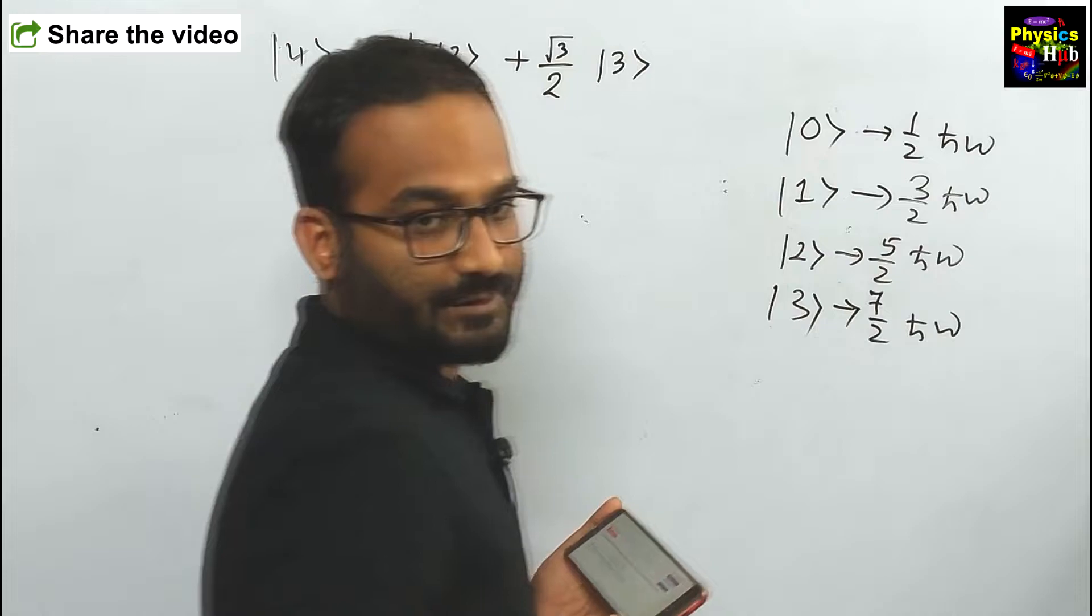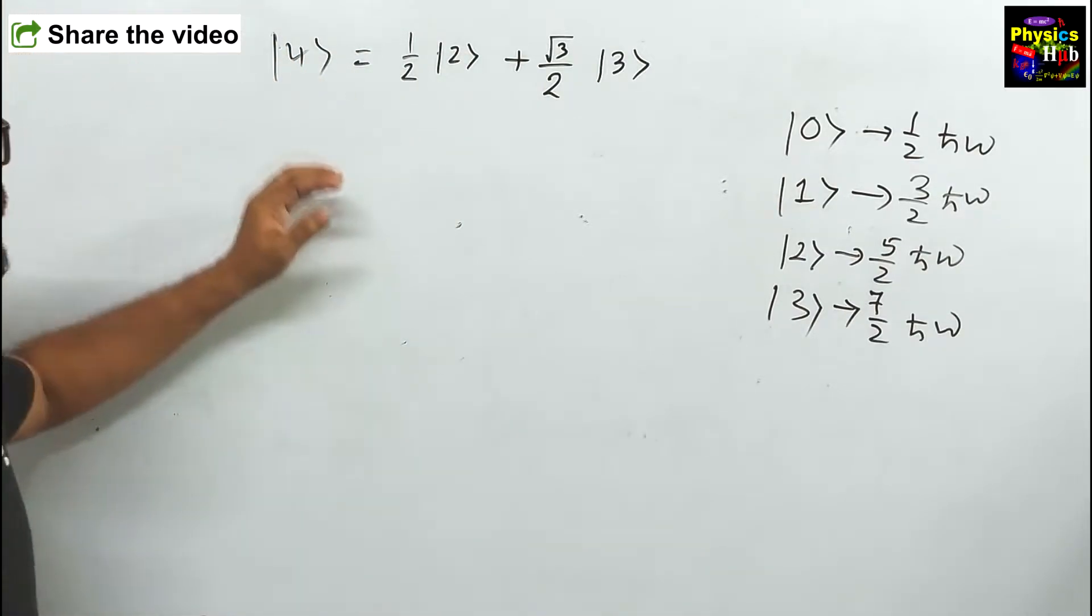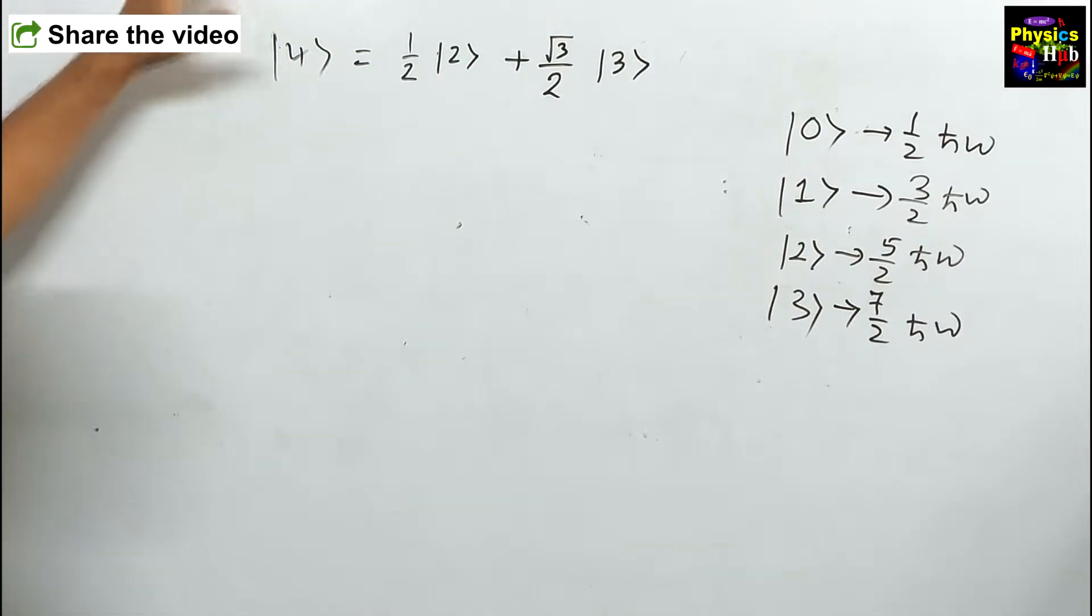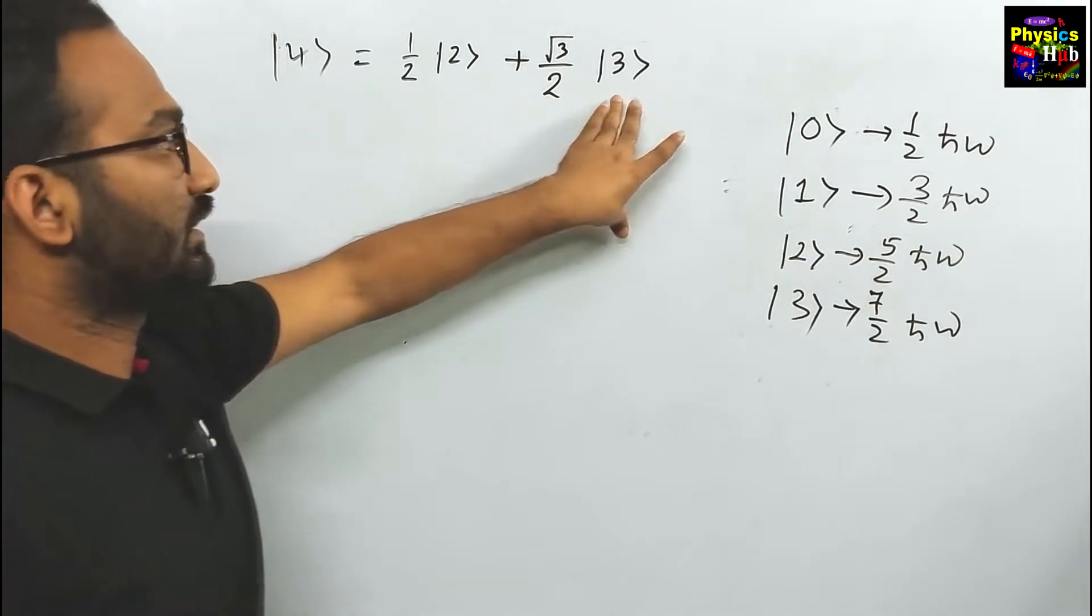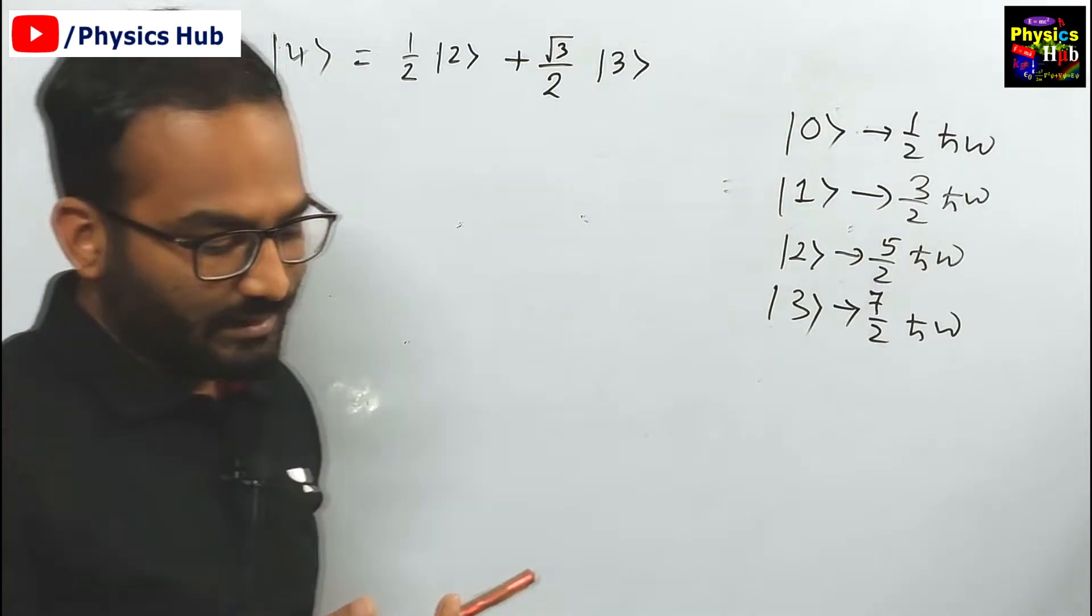In this way we know the energy states. From that you can see this wave function is the superposition of the second and third excited states, and you have to find out the average energy.